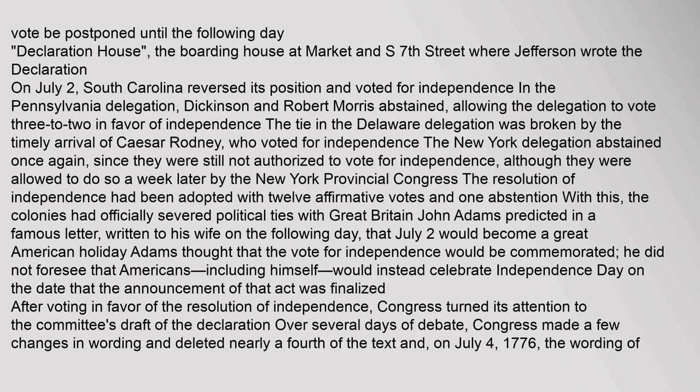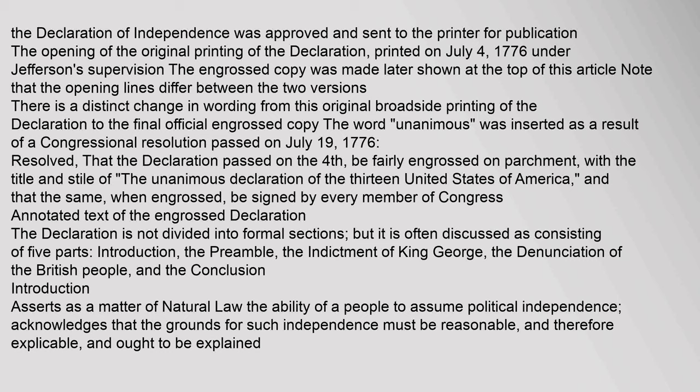John Adams predicted in a famous letter written to his wife that July 2 would become a great American holiday. Adams thought that the vote for independence would be commemorated; he did not foresee that Americans would instead celebrate Independence Day on the date that the announcement of that act was finalized. After voting in favor of the resolution of independence, Congress turned its attention to the committee's draft of the Declaration. Over several days of debate, Congress made a few changes in wording and deleted nearly a fourth of the text. On July 4, 1776, the wording of the Declaration of Independence was approved and sent to the printer for publication. The word 'unanimous' was inserted as a result of a Congressional resolution passed on July 19, 1776, resolving that the Declaration be fairly engrossed on parchment with the title 'The Unanimous Declaration of the Thirteen United States of America.'